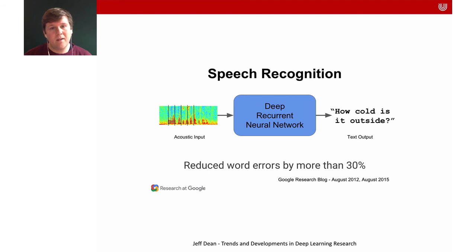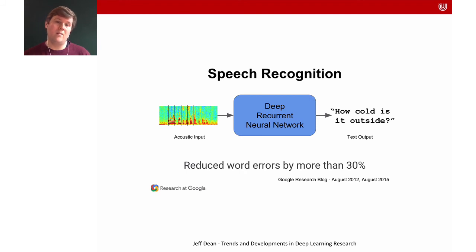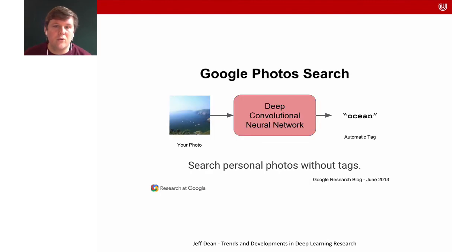Another example is speech recognition, where audio waveforms are fed into a neural network-based machine learning system that automatically converts them into text. Results by Google's Jeff Dean showed that deep learning in particular reduced word errors of such techniques by more than 30%.